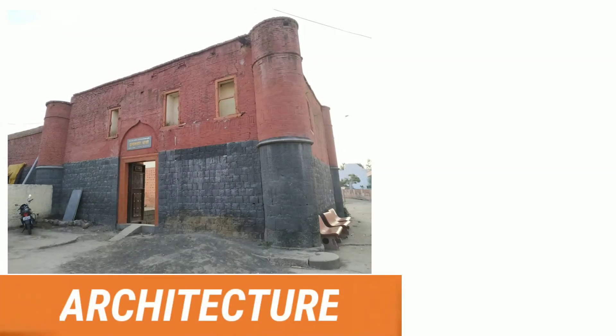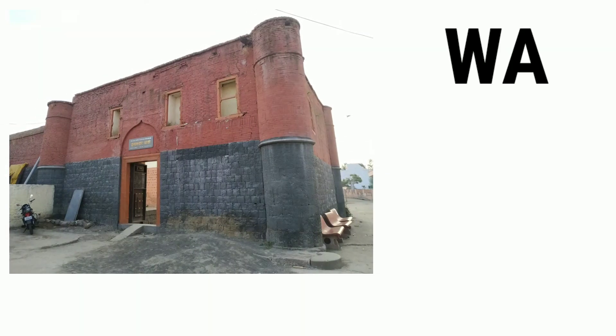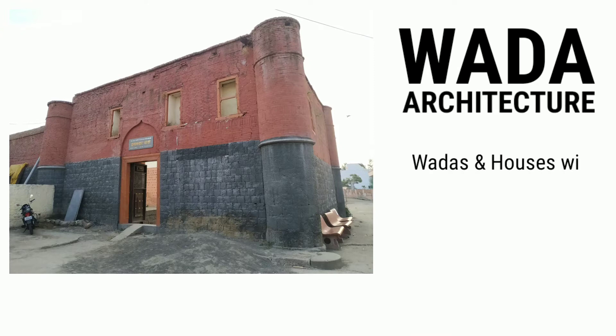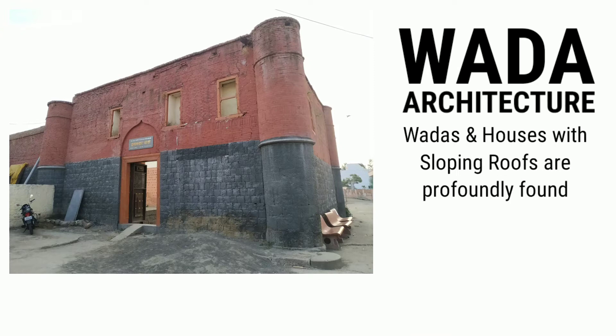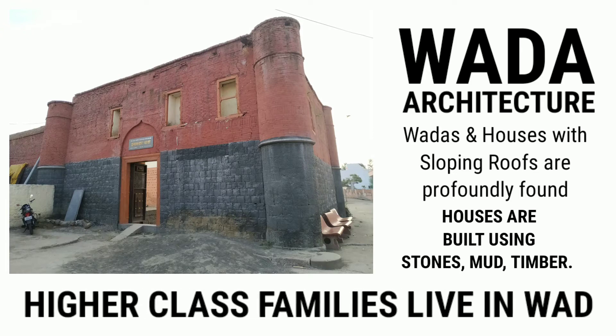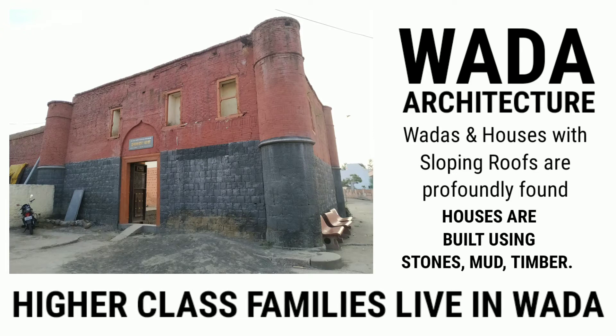Since Sangli was ruled by Hindus, we can see Vada architecture here. Vadas are houses with sloping roofs and are profoundly found in the region. Houses are built using stone, mud, and timber, and higher class families live in Vadas.